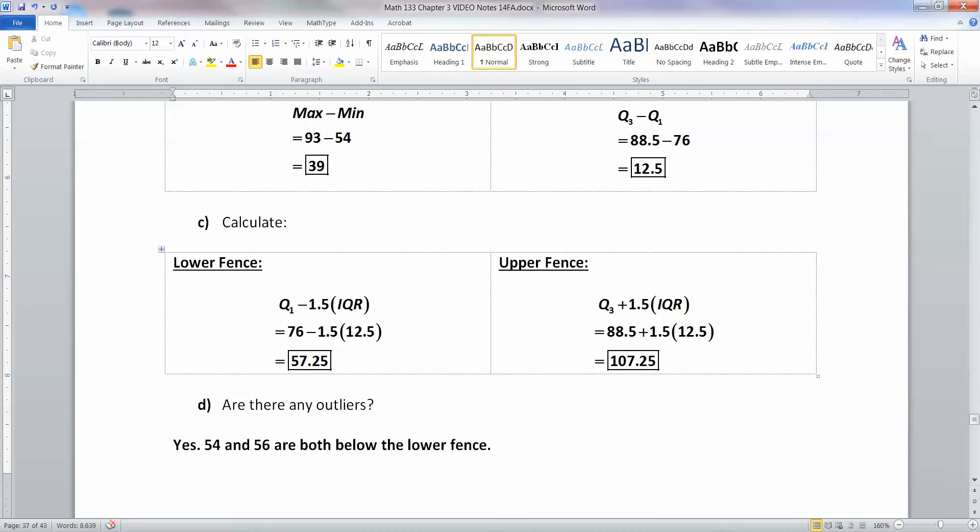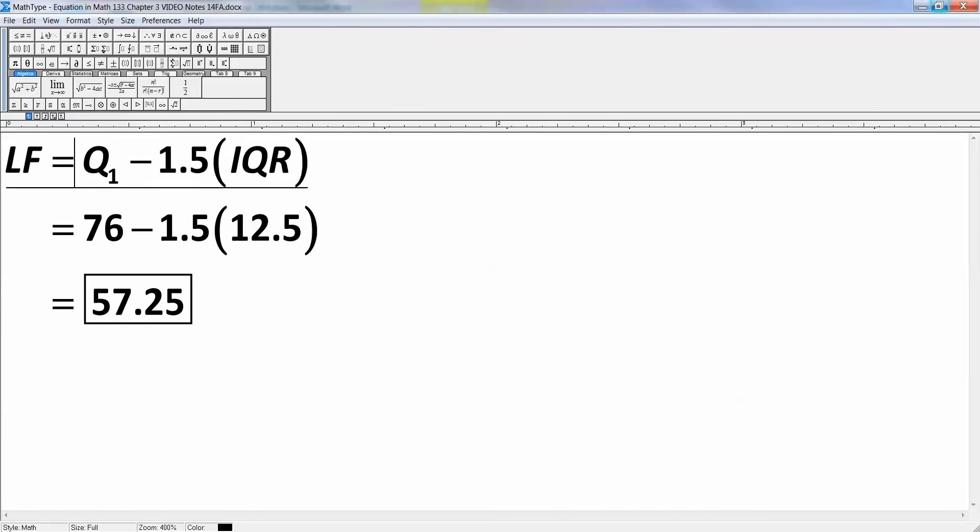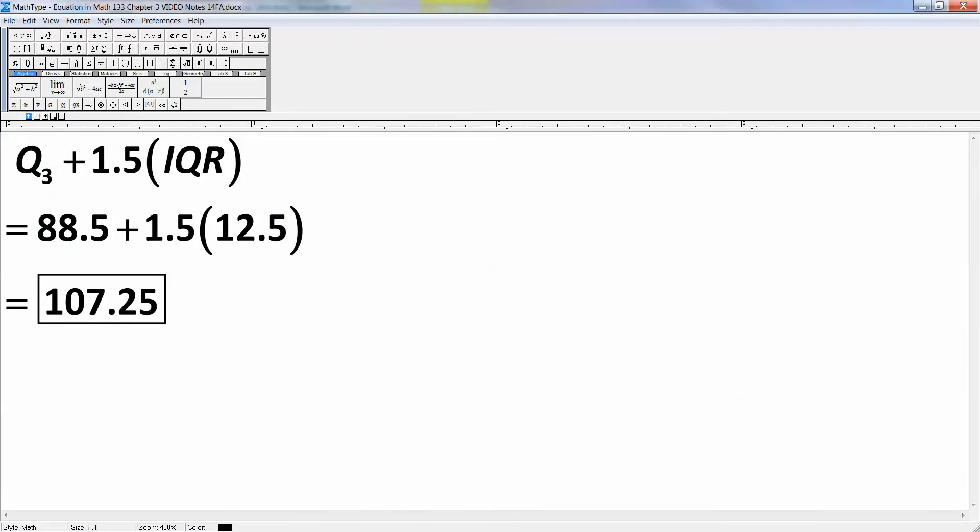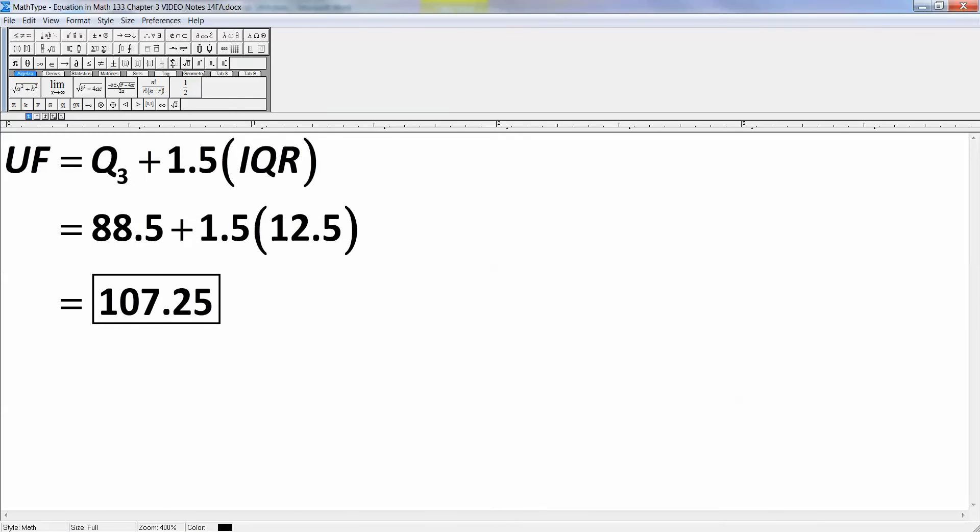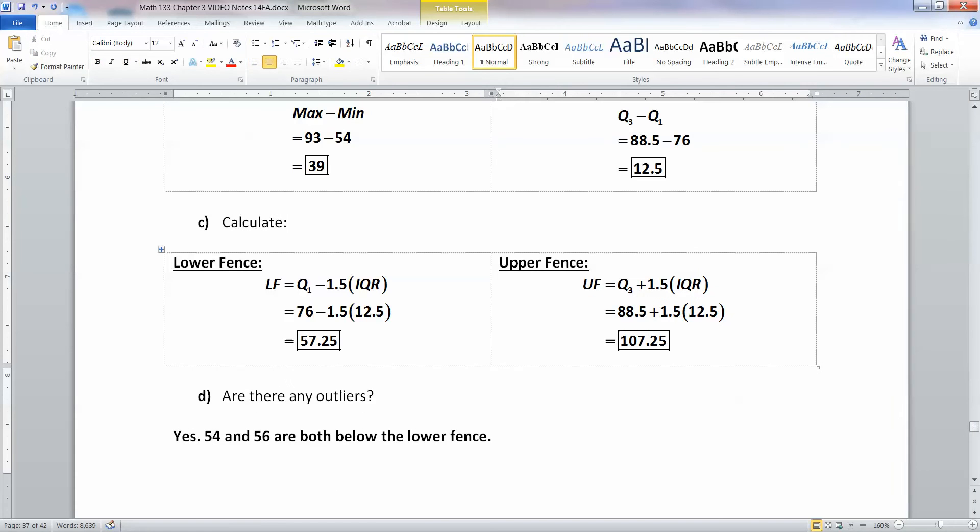Then we have the fences, which is Q1 minus 1.5 IQR. That's the lower fence, LF. Then the upper fence, which is UF, is Q3 plus 1.5 IQR, which is 88.5 plus 1.5 times 12.5.